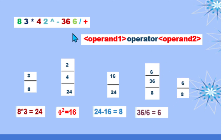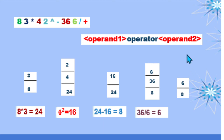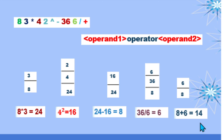We continue scanning and now have the last element, which is the addition operator. Since it is an operator, we pop out the last two operands from our stack, which are 8 and 6. So 8 is operand 1 and 6 is operand 2. We perform addition: 8 plus 6 is equivalent to 14. So 14 is our obtained value after evaluating this postfix expression using a stack.